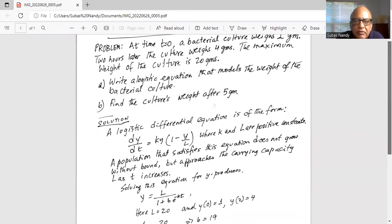A logistic differential equation is of the form dy/dt equals k times y times (1 minus y over L), where k and L are positive constants. A population that satisfies this equation does not grow without bound, but approaches the carrying capacity L as t increases.